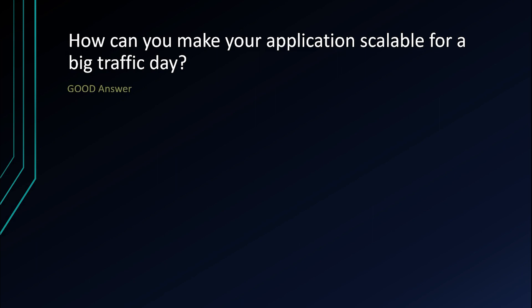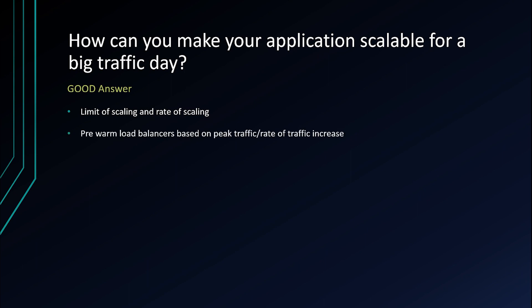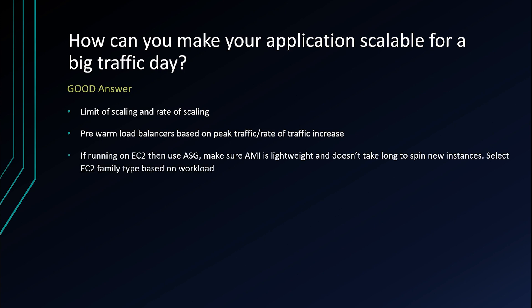A good answer should briefly touch on two factors when talking about scaling: one is the limit of scaling — what is the peak traffic your application has to accommodate — and second is the rate of scaling, like how fast traffic is going to increase. You should pre-warm your load balancer based on peak traffic or rate of traffic increase. Because if traffic increases from zero to 50,000 in a couple seconds, the load balancer is going to take time to warm up and your users will experience throttling. If you are running on EC2, use an autoscaling group, and make sure the AMI used is lightweight and does not take a long time to spin up new instances.